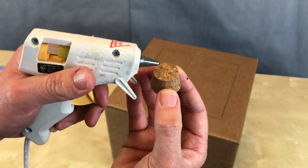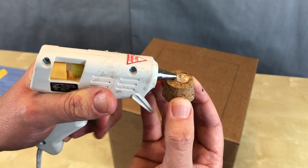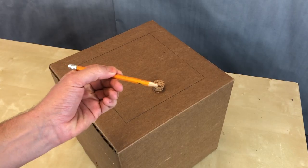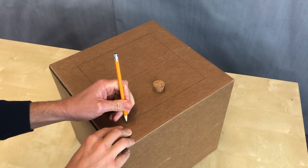Before we cut out the door, we want to add a knob, because it's easier to add it before we cut out the door. I found this random cork, but you can literally use any object and glue it onto one of the sides of the door.